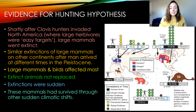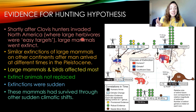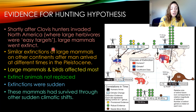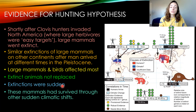What is the evidence for the human hunting hypothesis? We know that shortly after Clovis hunters — a group of people who hunted in North America during this time — invaded the continent, the large mammals went extinct, giving a temporal relationship. These large herbivores were probably easy targets because they hadn't really seen people before and weren't afraid of them. Similar extinctions of large mammals on other continents after humans arrived at different times in the Pleistocene also occurred.